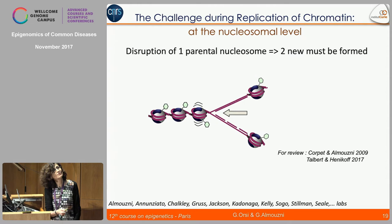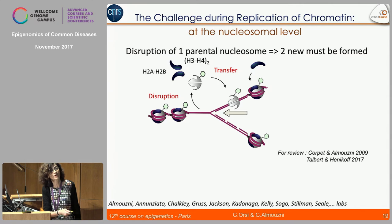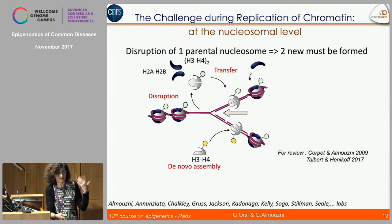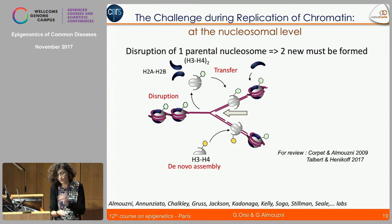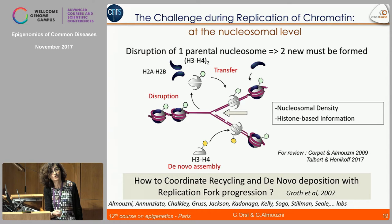At the nucleosomal level, you have disruption of one parental nucleosome for two to be formed if you want to maintain nucleosomal density. That comes about with a disruption and transfer of the parental one, and the addition of newly synthesized histones that will then have to adapt to where they are. The question is how you coordinate recycling and de novo deposition with fork progression — important for maintenance of nucleosomal density and for histone-based information. This has been discussed a lot with Anja, who will tell you more about these aspects.